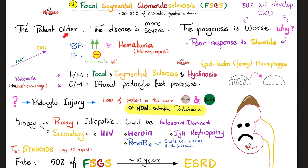Focal segmental glomerulosclerosis: the patient is older, the disease is more severe, the prognosis is not as excellent, and it has poor response to steroids. You have focal and segmental sclerosis and hyalinosis, lipid-laden macrophages, and non-selective proteinuria — you're losing albumin and other proteins. Associations include HIV, heroin, parvovirus B19, IgA nephropathy, and sickle cell/thalassemia. 50% of patients will end up with chronic kidney disease.